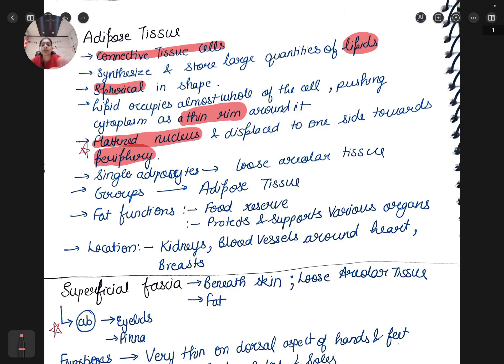First we will start with adipose tissue. In adipose tissue, we can see there is connective tissue cells. Lipids are there. You need to remember which shape is there - the spherical shape. The nucleus is flattened and the cytoplasm is at a thin rim around, and nucleus is at periphery.